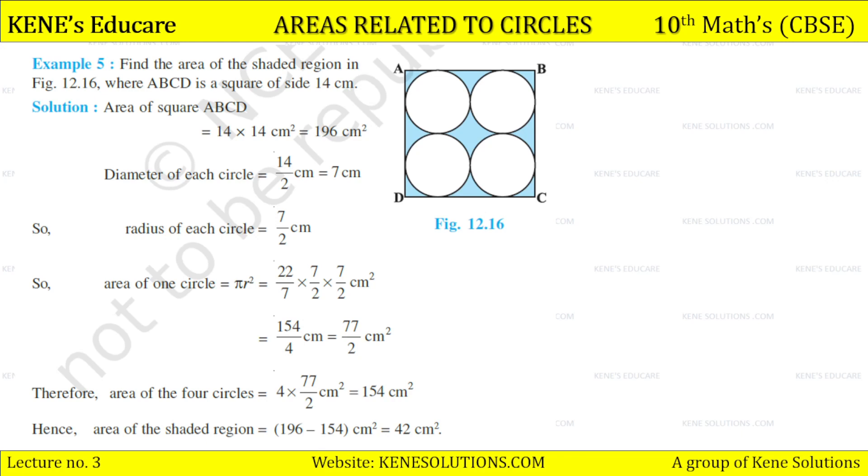So area of one circle, what will happen? πr². We get 77/2 cm². Multiply with 4, area of 4 circles we get 154. Area of shaded region = 196 - 154 = 42 cm². Square area of square, we have subtracted the area of the circles.